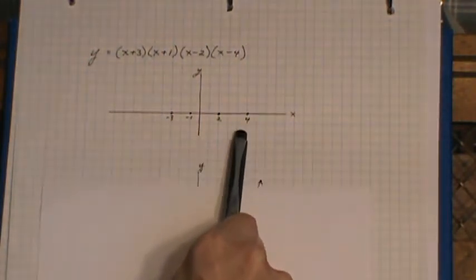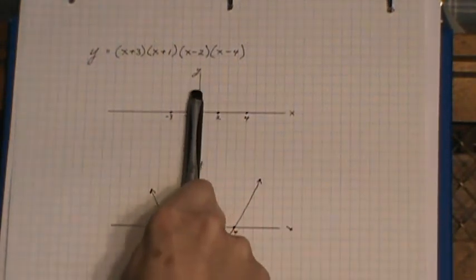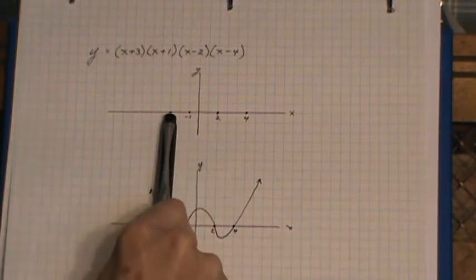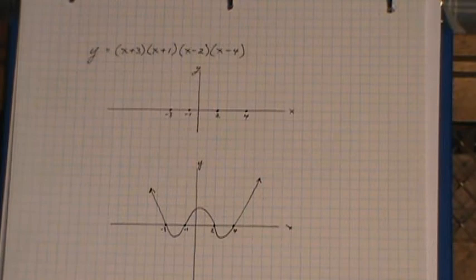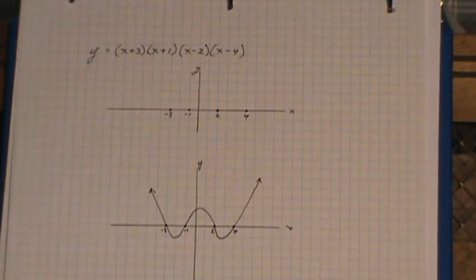crossing at the 4, at the 2, at the 1, and at the negative 3. And since the paper already fell down, you can see that that's the shape that I get. It's kind of a standard W shape for a 4th power polynomial.